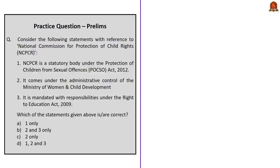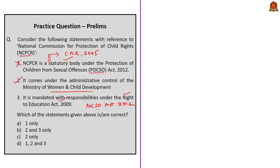Let us take up the given question. Three statements are given with reference to NCPCR and we have to choose correct statements. Statement 1 is incorrect because the commission was established as per the Commission for Protection of Child Rights Act of 2005 and comes under the Ministry of Women and Child Development. The commission is entrusted with responsibilities under the POCSO Act of 2012 and the Right to Education Act of 2009, and is also responsible to safeguard children's rights as per the Constitution and the UN Convention. Therefore, the correct answer is option B, 2 and 3 only.